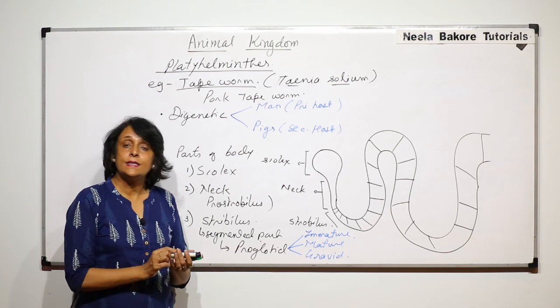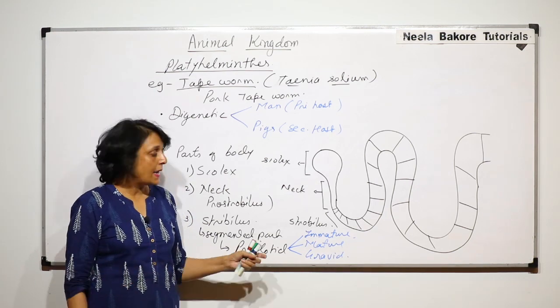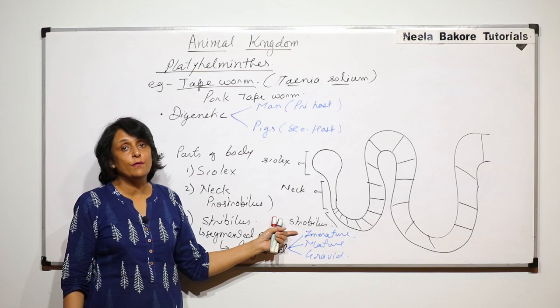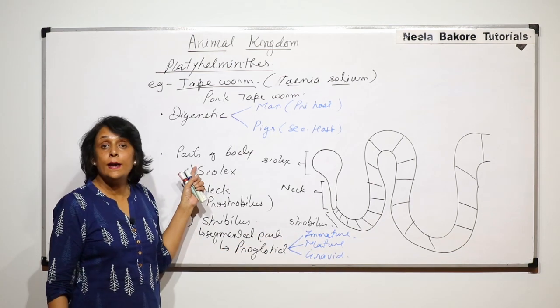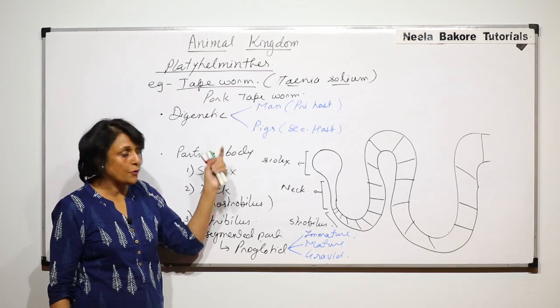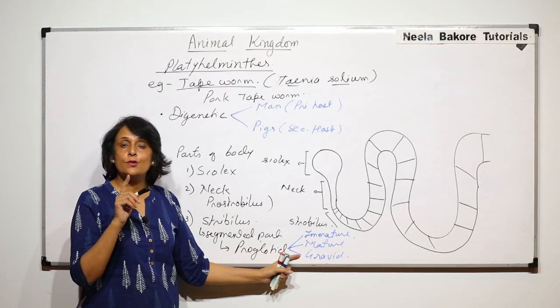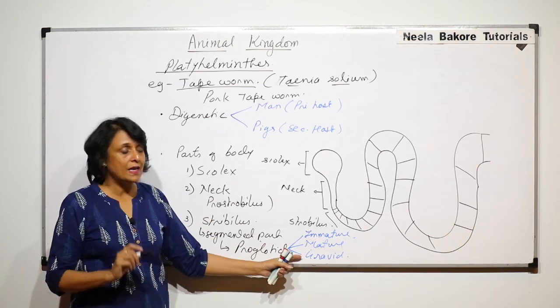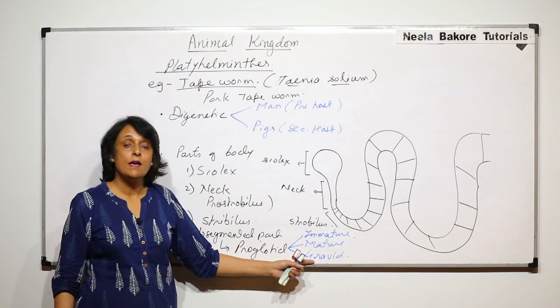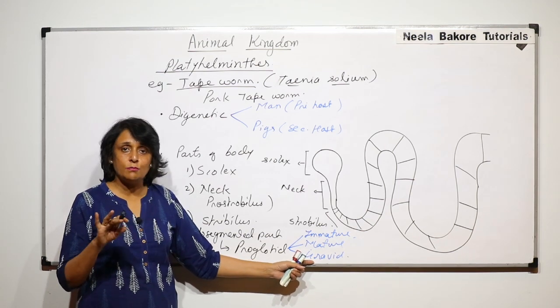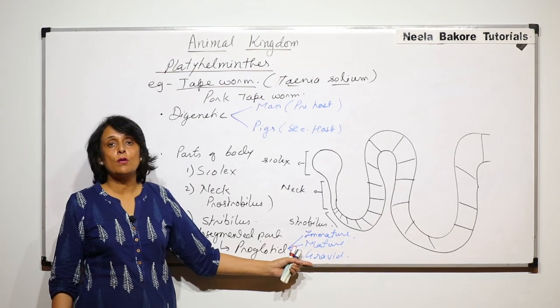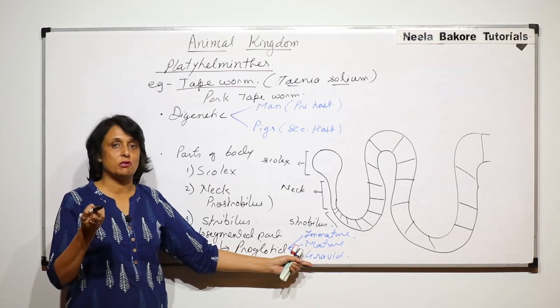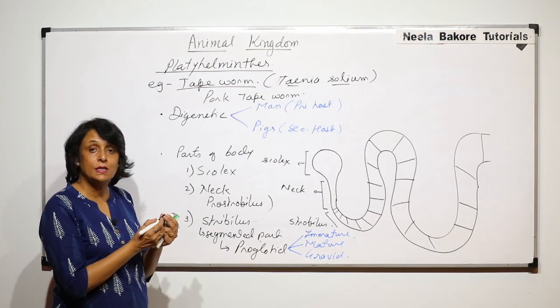Immature proglotids, as the name tells us, they would not have the sex organs fully formed. Mature ones have the sex organs and tapeworms they are hermaphrodite, so every segment is going to have testis as well as ovaries. And the last segments where fertilization has taken place they are called gravid proglotids. In gravid proglotids there is only uterus which is present.